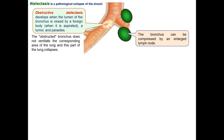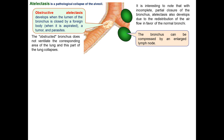Atelectasis has two types: obstructive and compressive. Obstructive atelectasis develops when the lumen of a bronchus is closed by a foreign body that has been aspirated, a tumor, or parasites. The obstructed bronchus does not ventilate the corresponding area of the lung and this part collapses. Obstructive atelectasis may also develop due to compression of a bronchus by enlarged lymph nodes. Notably, even with incomplete or partial closure of a bronchus, atelectasis can develop due to redistribution of airflow in favor of normal bronchi.